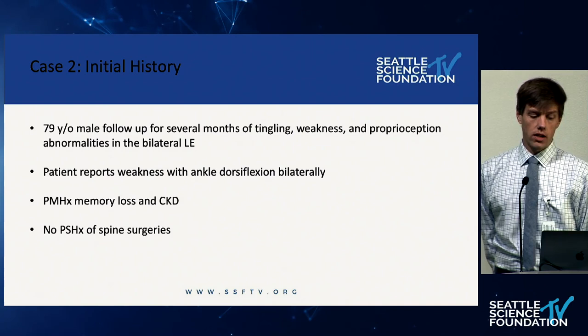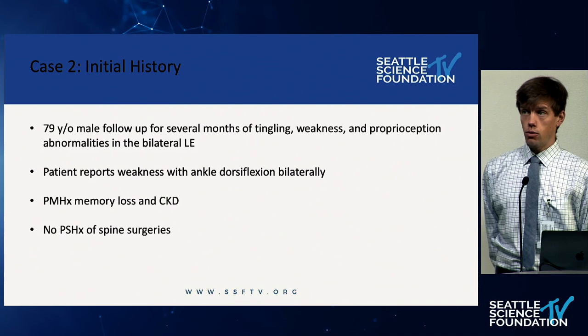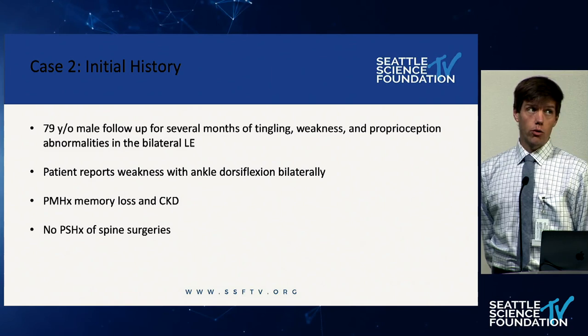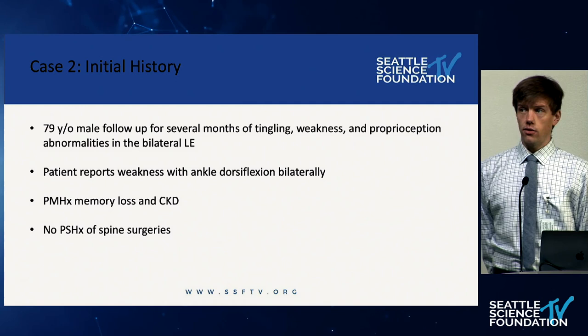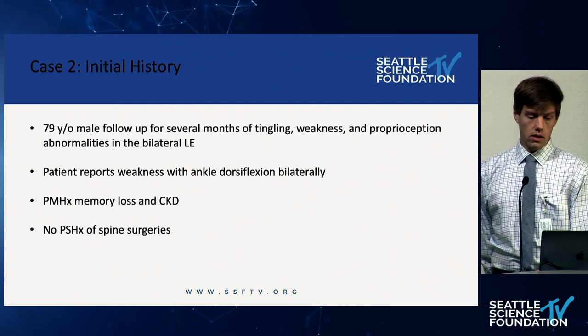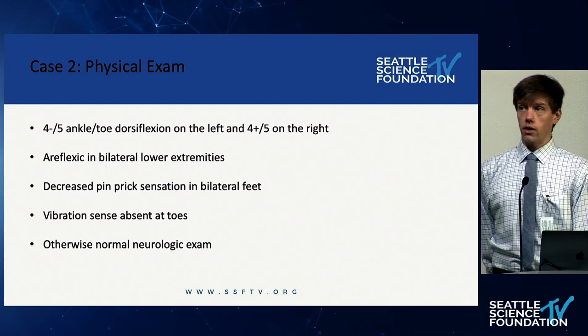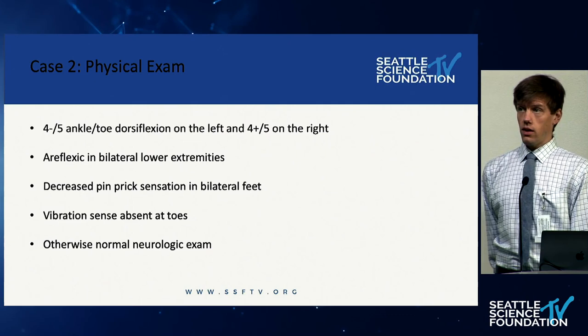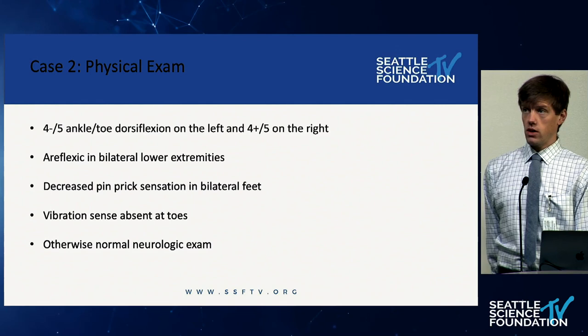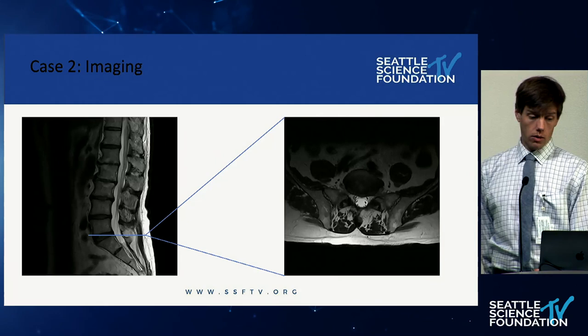The second case is a 79 year old male who followed up for several months of tingling, weakness, and proprioceptive abnormalities bilaterally in the lower extremities. This patient also reports weakness with ankle dorsiflexion bilaterally. He has some memory loss and chronic kidney disease in his history, and no spine surgeries. He had a little bit of weakness bilaterally — four minus out of five ankle and toe dorsiflexion on the left, with four plus out of five strength on the right. He's areflexic bilaterally in his lower extremities and has decreased sensation in his feet including vibration sensation absent at the toes, but his neurologic exam is otherwise unremarkable.